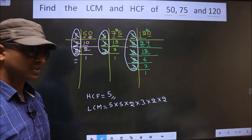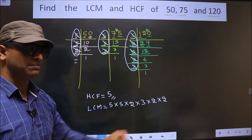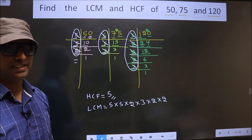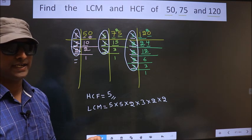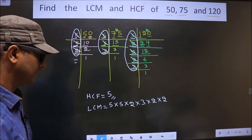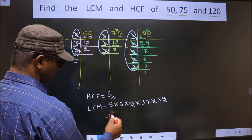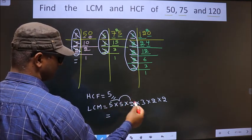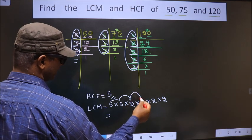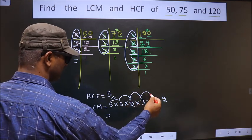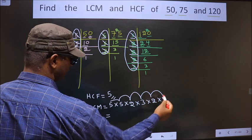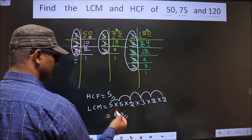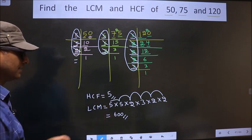Therefore, you multiply all these numbers. Whatever number you get that is your LCM. So let us multiply. That is 5 into 5, 25, into 2, 50, into 3, 150, into 2, 300, into 2, 600. So this is our LCM and this is our HCF.